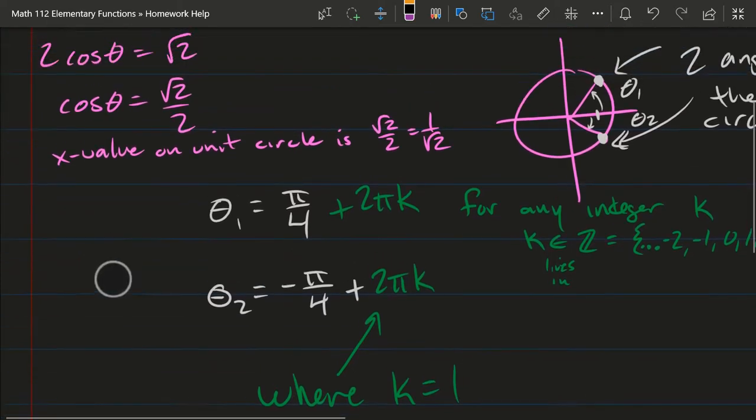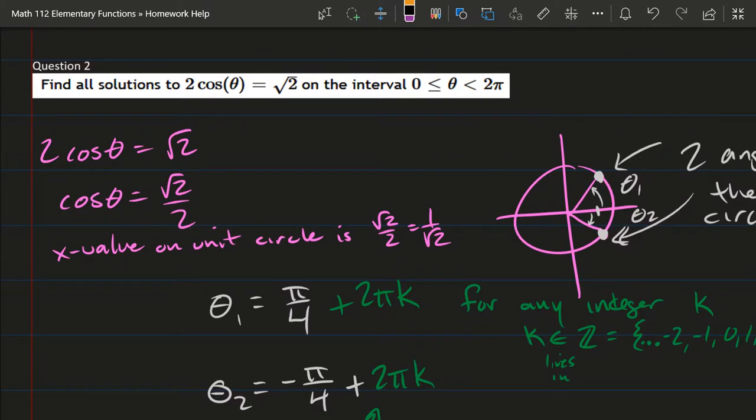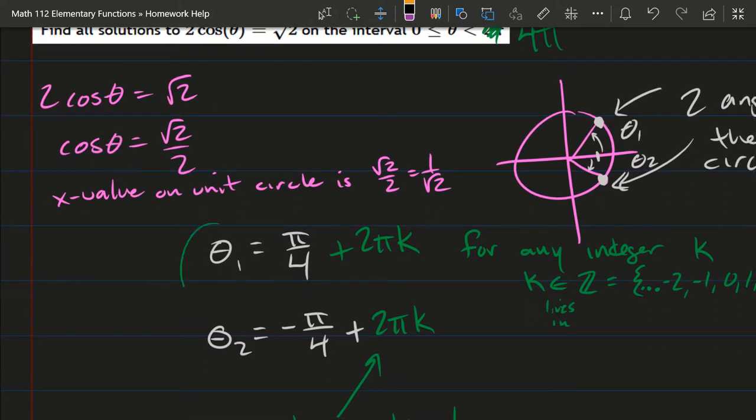So it would be kind of annoying to answer this question, but you may see it instead of 2π, it might be 4π, and that's the first two laps around the unit circle, and I would get two angles out of θ₁ and two angles out of θ₂ where I would pick the k value of 0 and 1. That would give me the first two laps for θ₁. And I would pick 1 and 2 for θ₂. That would give me both angles down there on the first two laps around the unit circle.